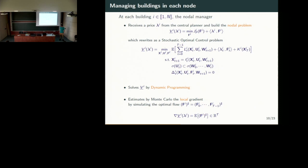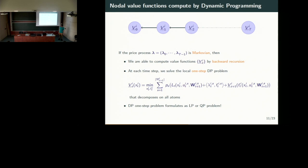As it is a multi-stage stochastic problem, we are able to solve it by dynamic programming. Once you have computed the value function, you are able to compute the optimal flow by Monte Carlo techniques, as we deal with expected values. The main advantage is that this problem formulates as an LP or QP problem, so that's quite easy to solve, for instance with Gurobi.